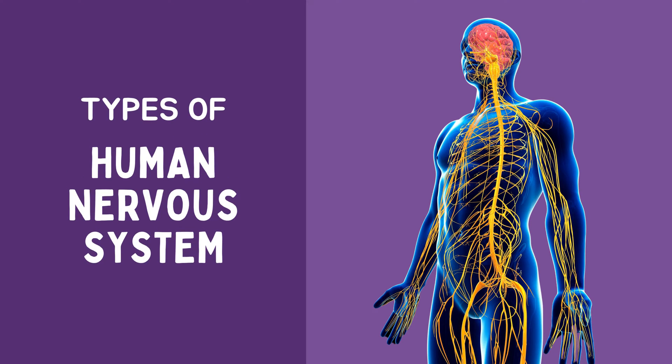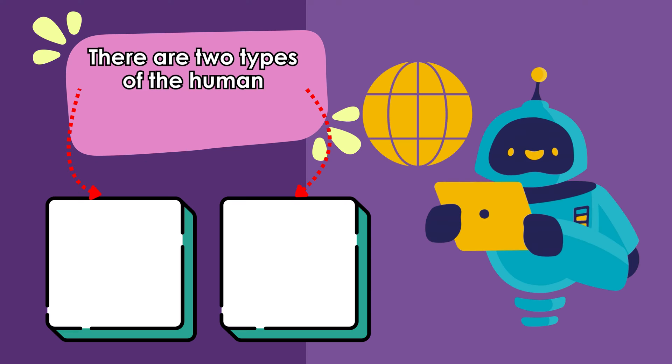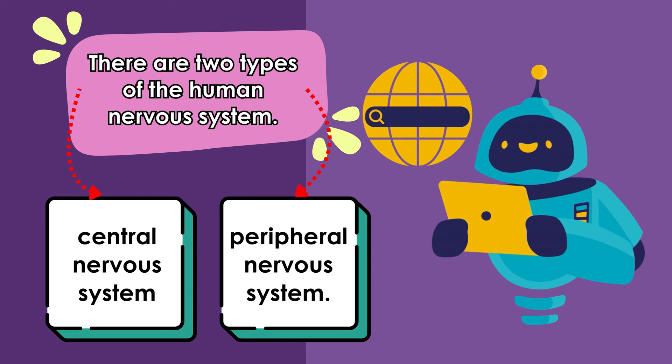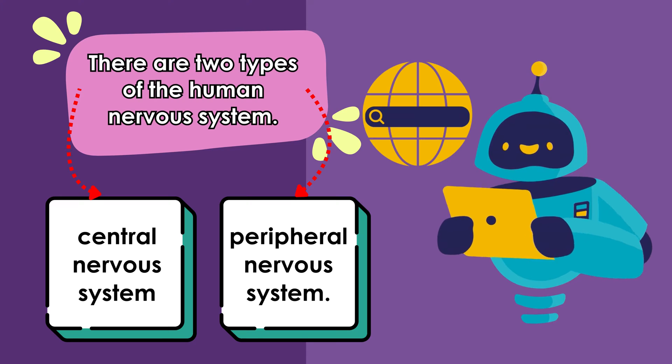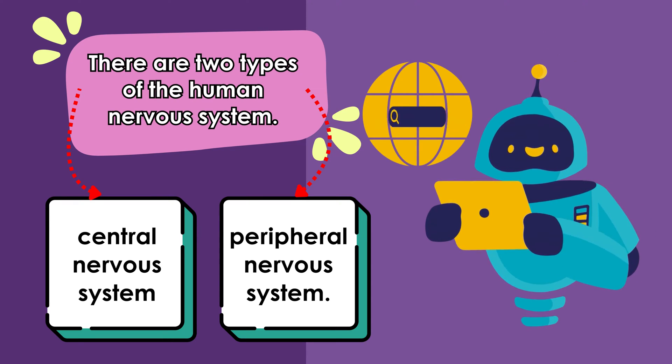Types of Human Nervous System. The nervous system consists of the brain, the spinal cord, and a network of nerves throughout the body. There are two types of the human nervous system: the central nervous system and the peripheral nervous system.